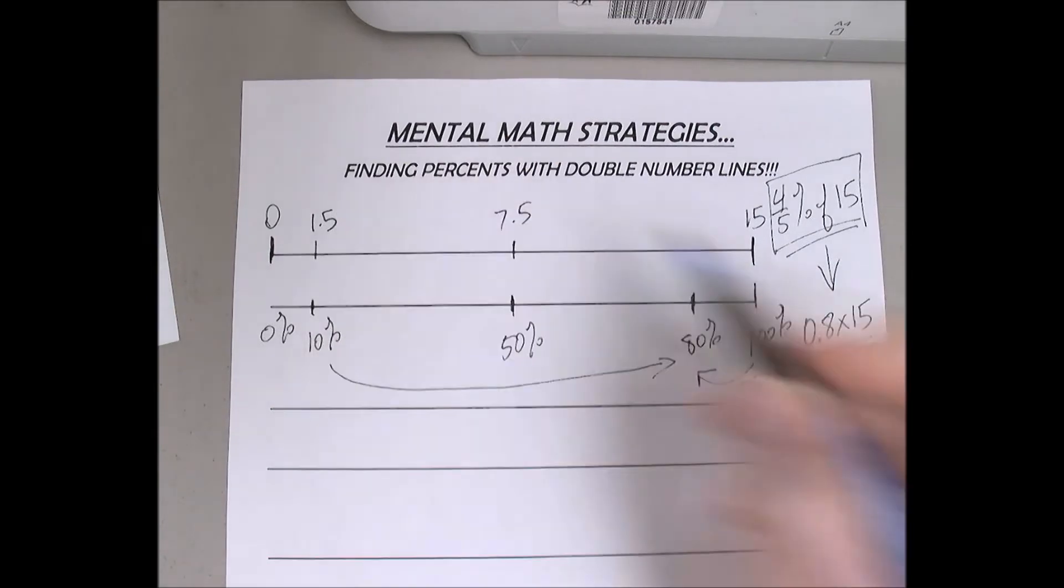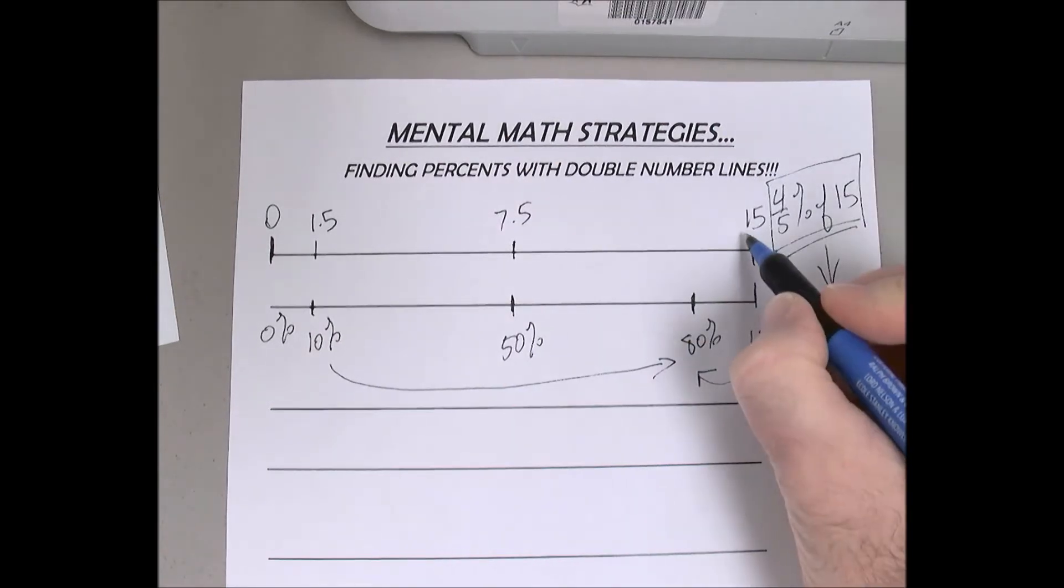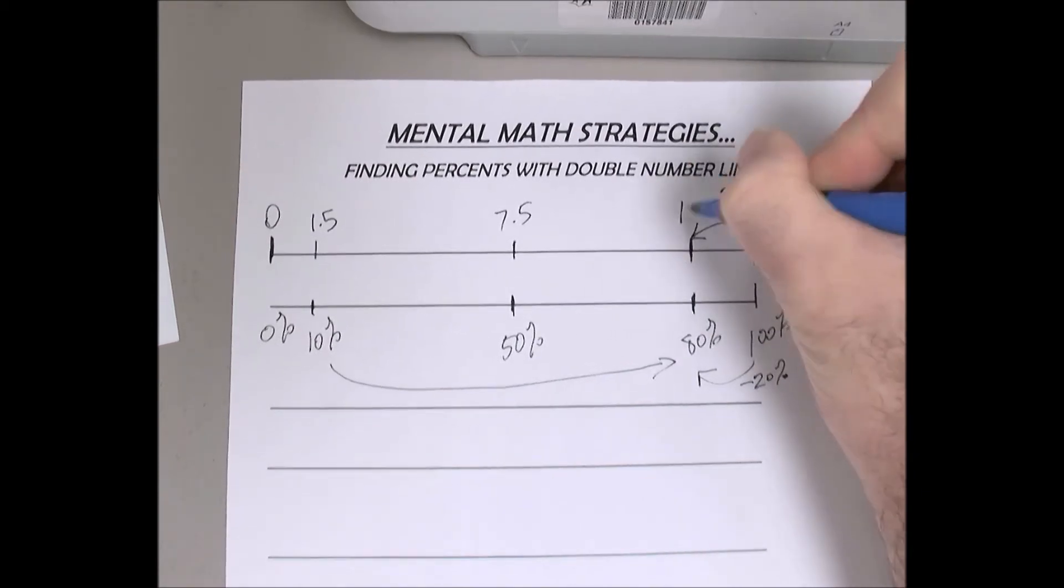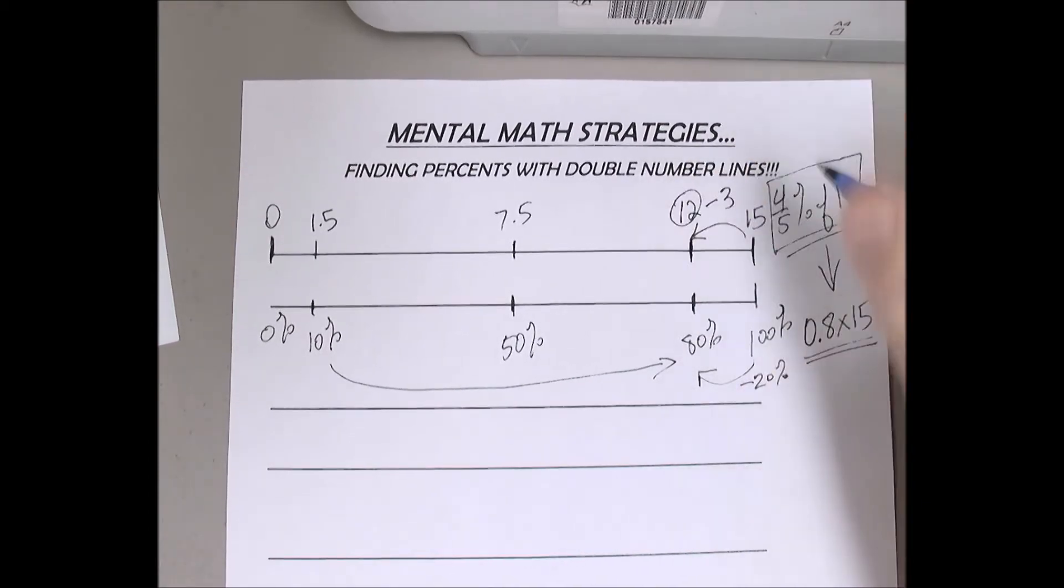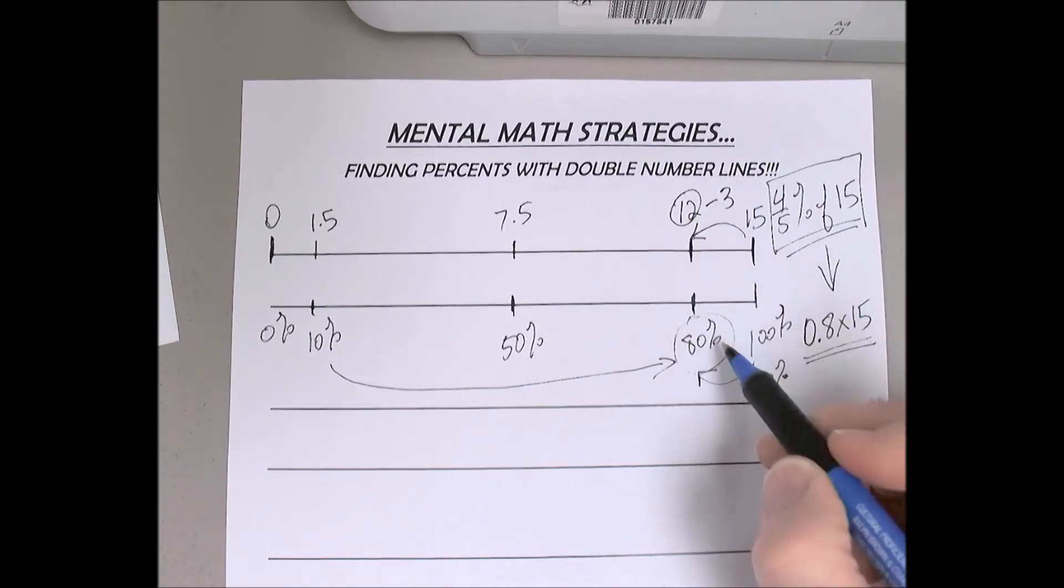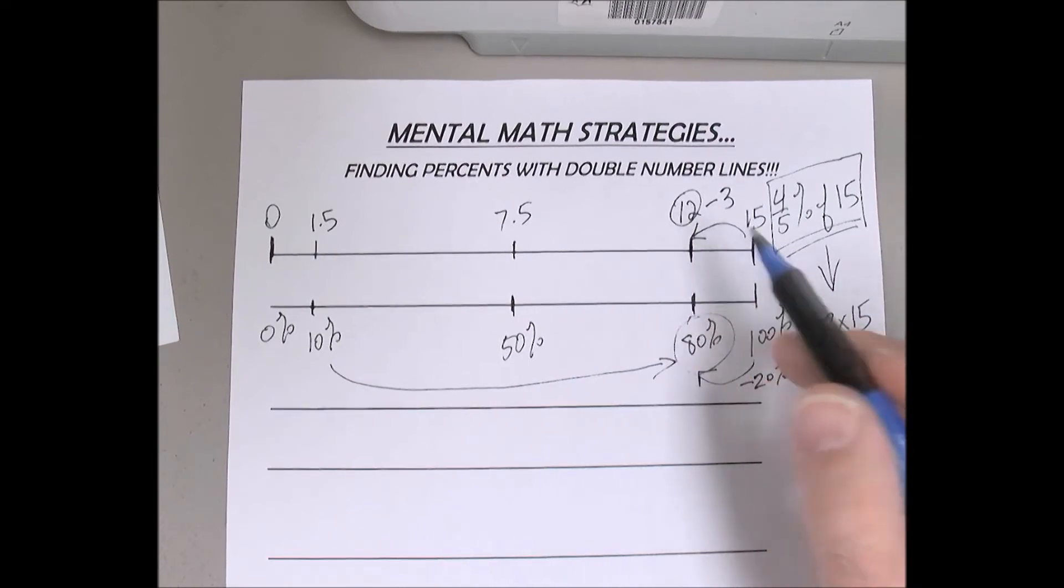Very good. So if I multiply that by two, this amount here is going to be three less, and that gives me my target number of 12. So if 80 percent of 15 is 12, 80 percent of 15 is 12. Am I doing this right? Yes. You are.